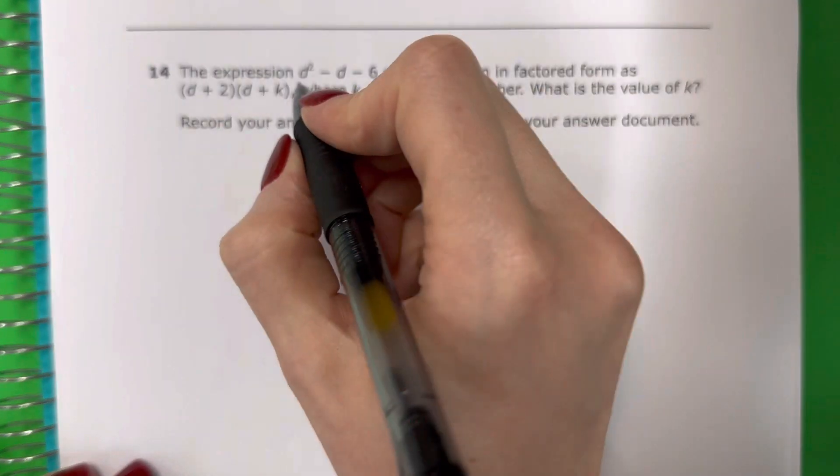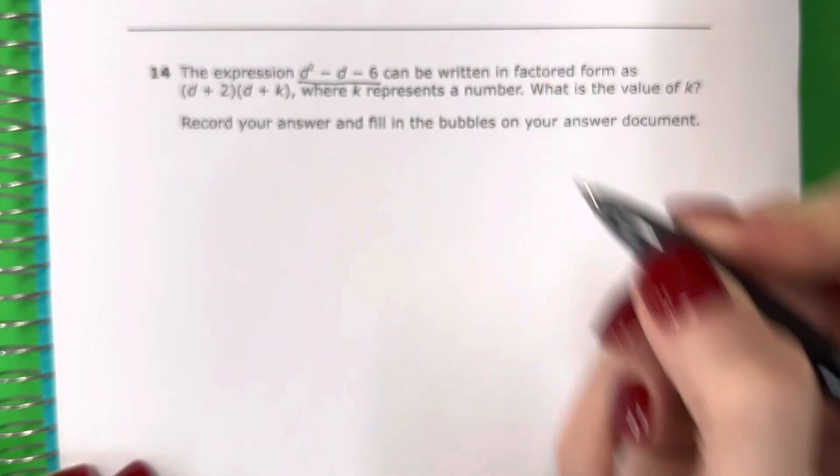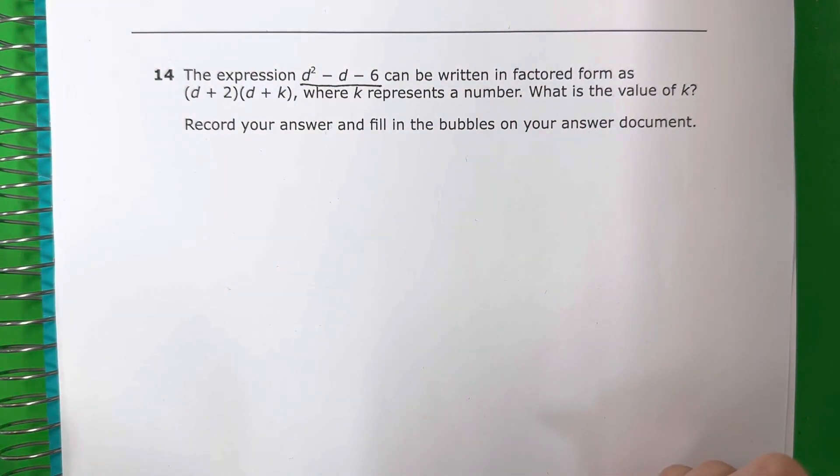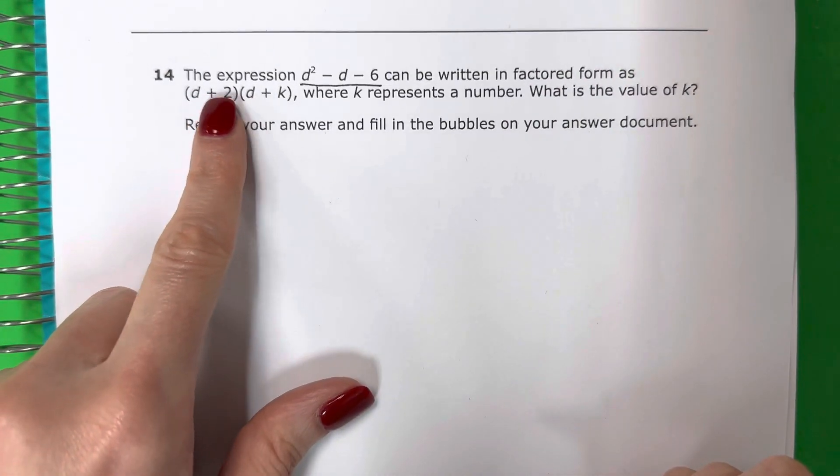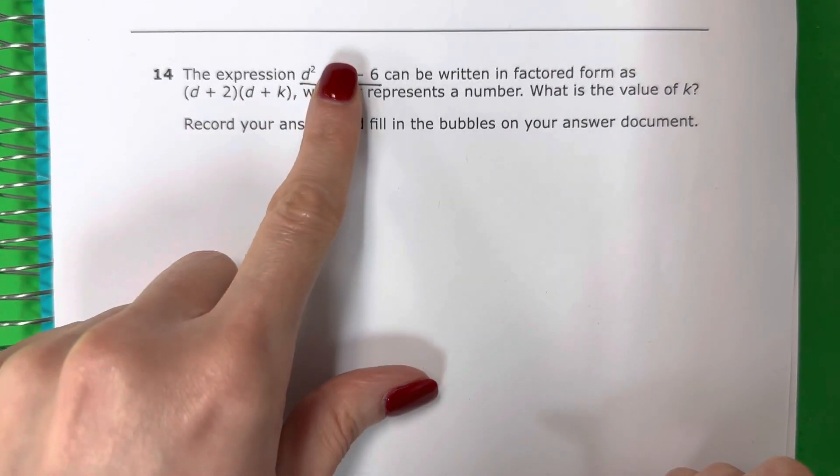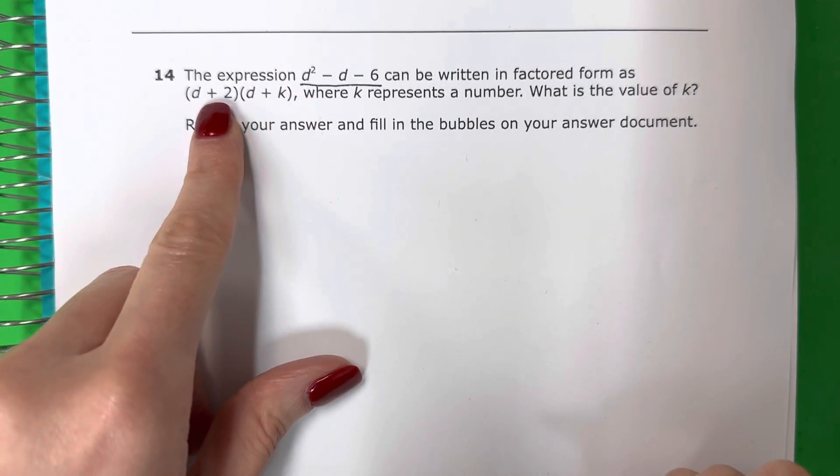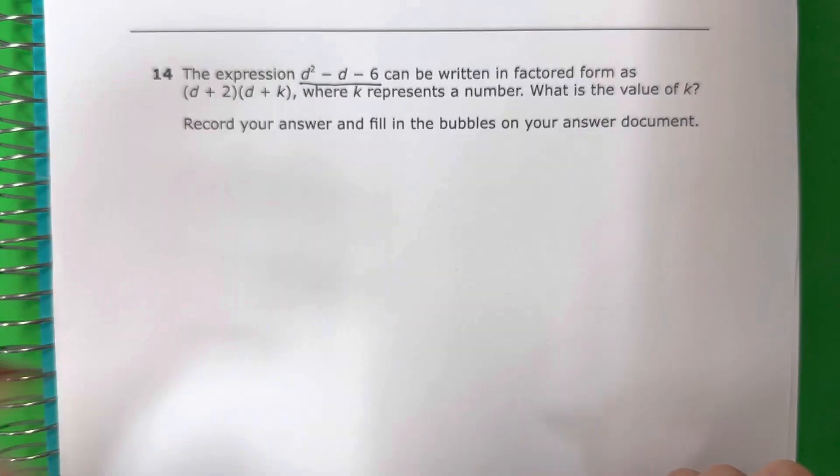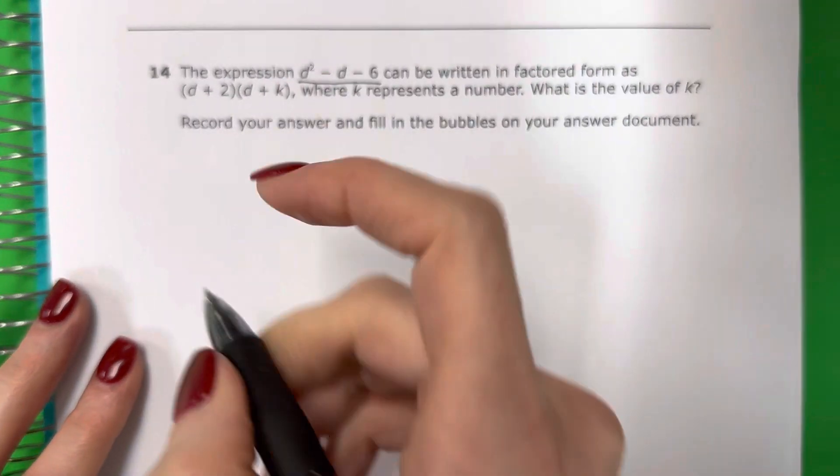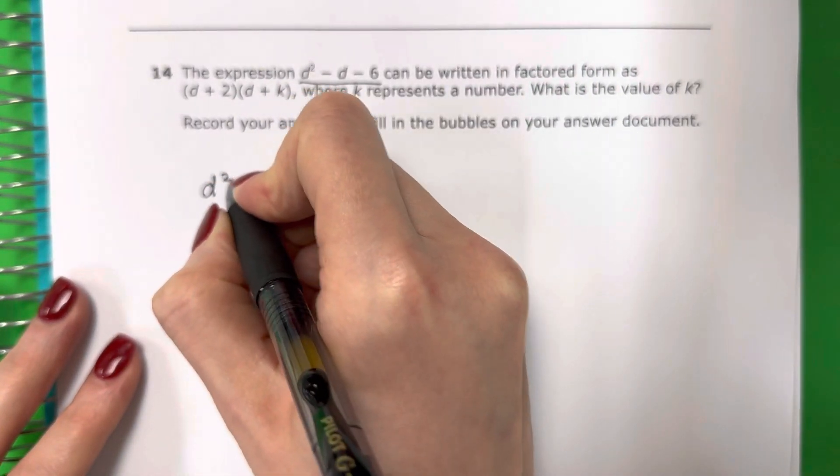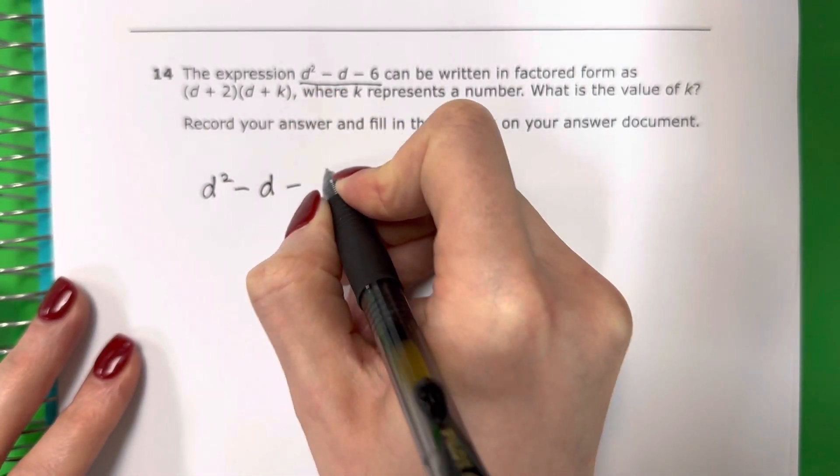Alright, so I have this over here, and I need to factor it. And factoring means I need to do like this. So tengo este, y necesito hacer factorización para tener así. So let's go ahead and do that. Vamos a hacerlo. So let me go ahead and copy. So d squared minus d minus 6.